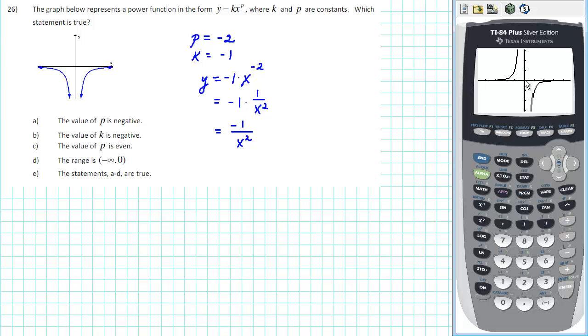On the other hand, when p is even, the graph has symmetry with respect to the y-axis. So it is necessary for p to be even as well.